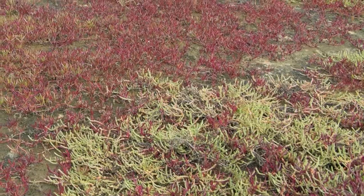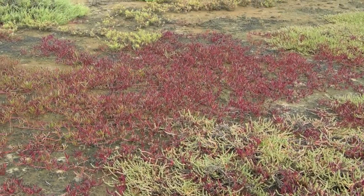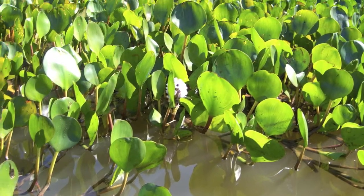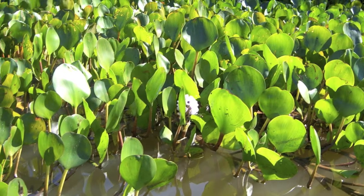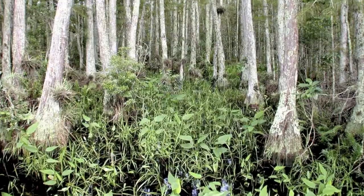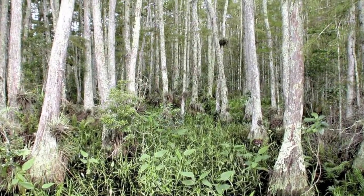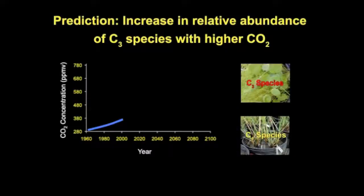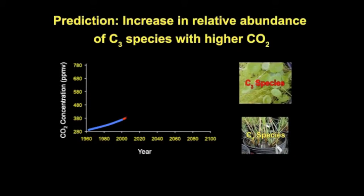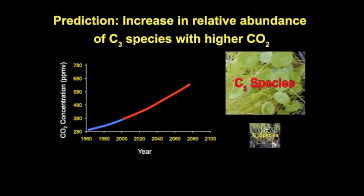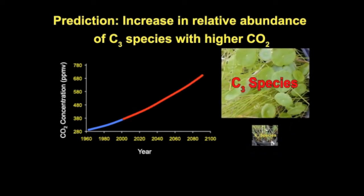Because of species differences in sensitivity to CO2, the composition of a wetland is one factor that will determine whether increases in CO2 will have an effect or not. One simple prediction is that C3 species will increase in abundance relative to C4 species in a mixed community as CO2 increases.